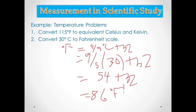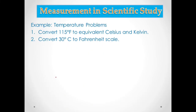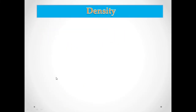So 30 degrees Celsius is equal to 86 degrees Fahrenheit. Now let's go to the last topic, which is density.